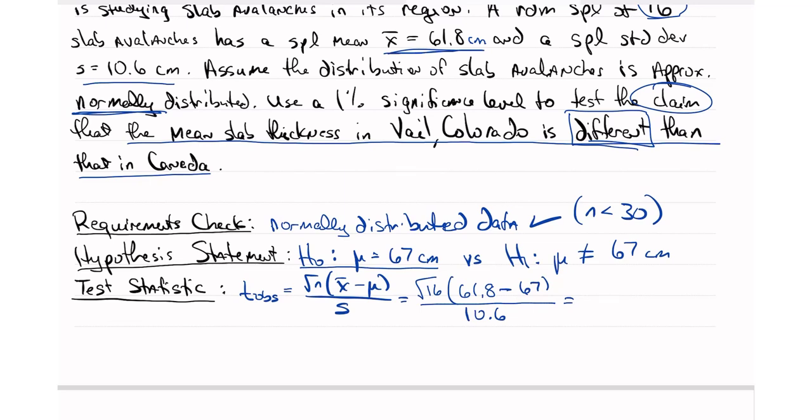So I'm going to get my calculator out, see what I get. I'm going to take the square root of 16, which is 4, times I'm going to open parentheses, 61.8 minus 67, close the parentheses, then divide by 10.6, which is equal to negative 1.96226. Now I'm using a T table, so I'm going to round to the third decimal place, so I'm going to look at the fourth decimal place, which is a 2, so I'm just going to keep this value that's to the left of it. So this is going to be negative 1.962.